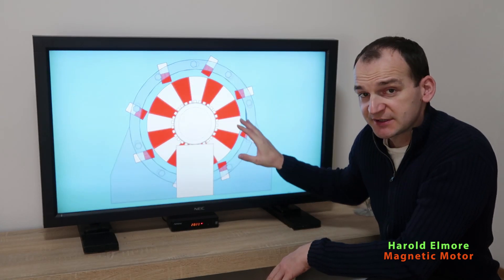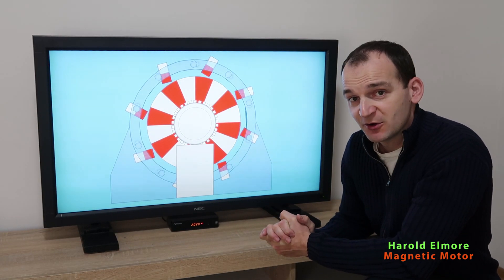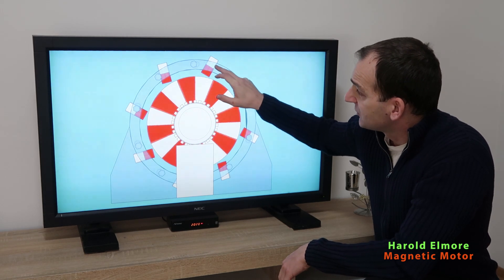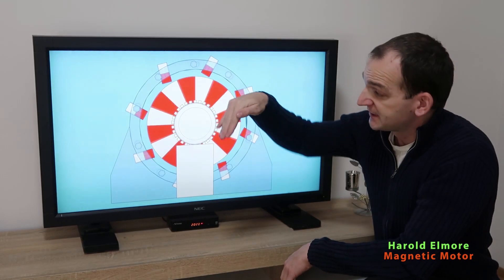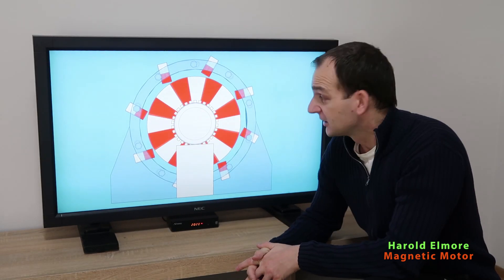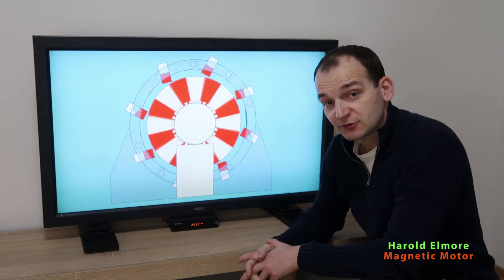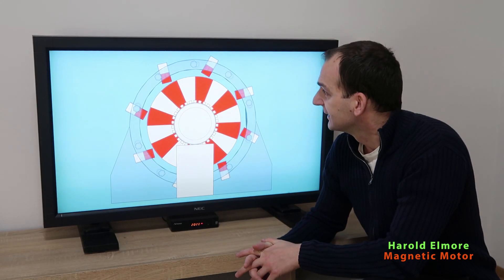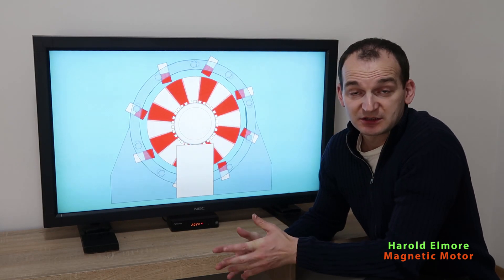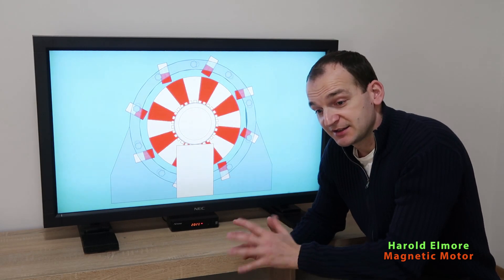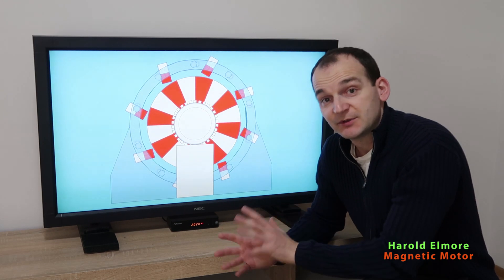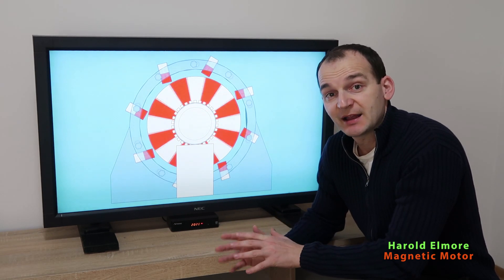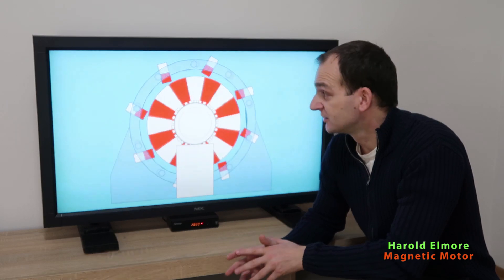And you can see the first thing you notice in this magnetic motor is that the stator magnets are with some angle. They're not perpendicular to the rotor but they are shifted in angle maybe 30 degrees, 20 degrees. I don't know exactly. And this of course is logical that in such a way the same poles would repel and it would push the rotor.